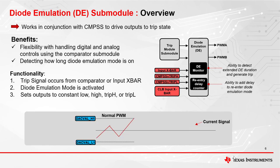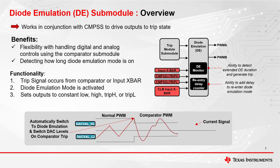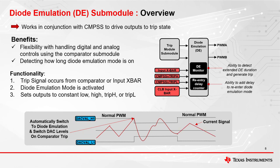In the waveform, the red is the current signal. When the signal reaches the CMPSS DACVAL H1, diode emulation mode becomes active and the CMPSS DACVAL H and DACVAL L will be loaded with a new value from the diode emulation. When the current signal returns to normal operation, the CMPSS DACVAL H1 will be the original DACVAL H1 and DACVAL L1. When diode emulation becomes active, the PWM outputs will be driven to a known state of trip H, trip L, high or low.